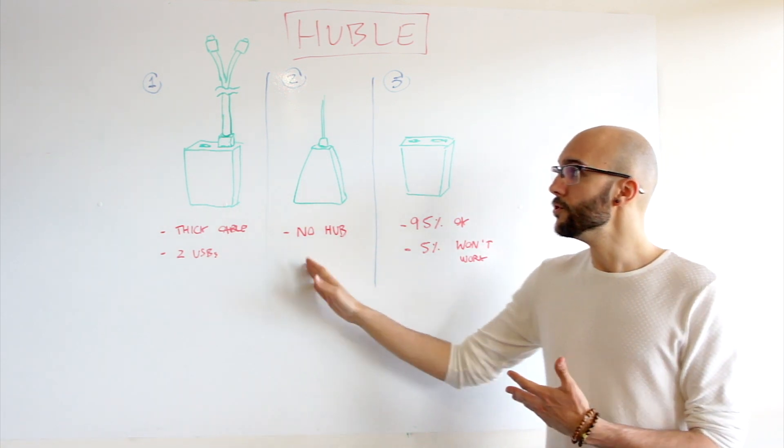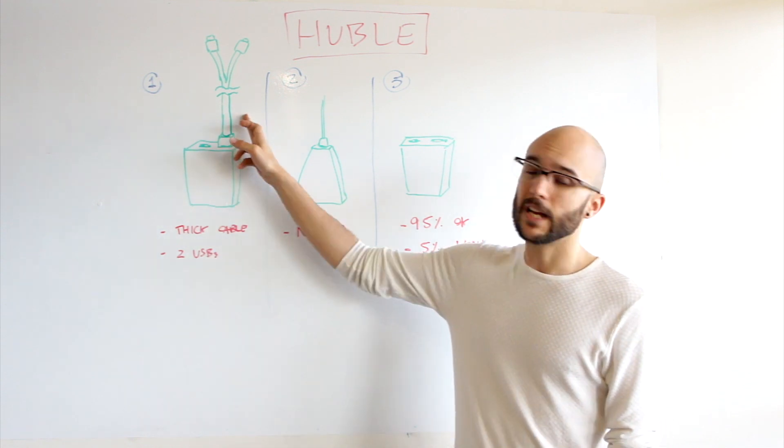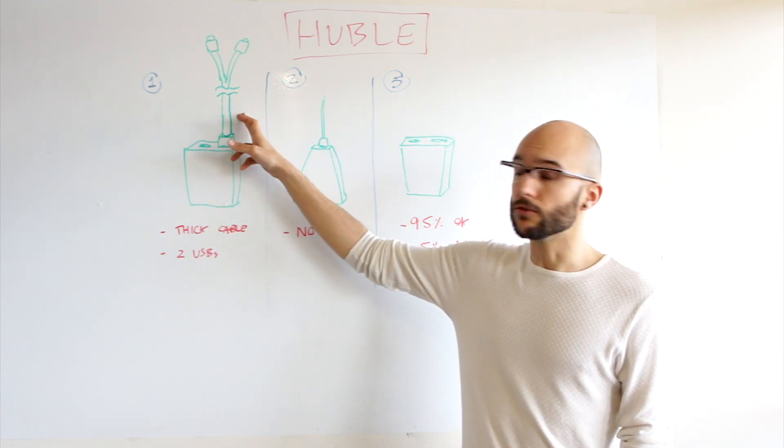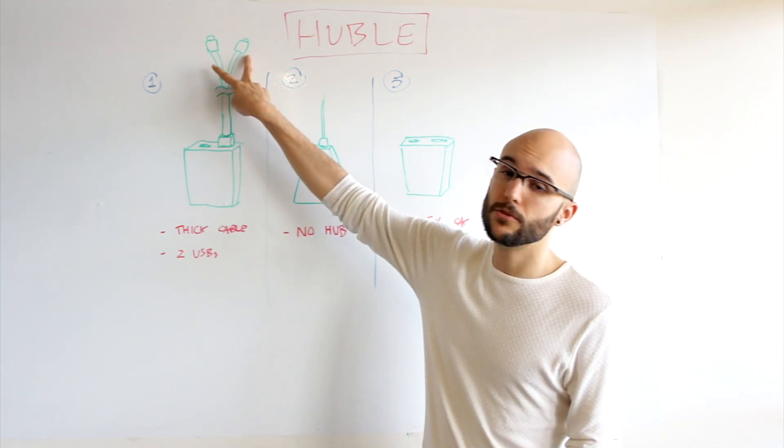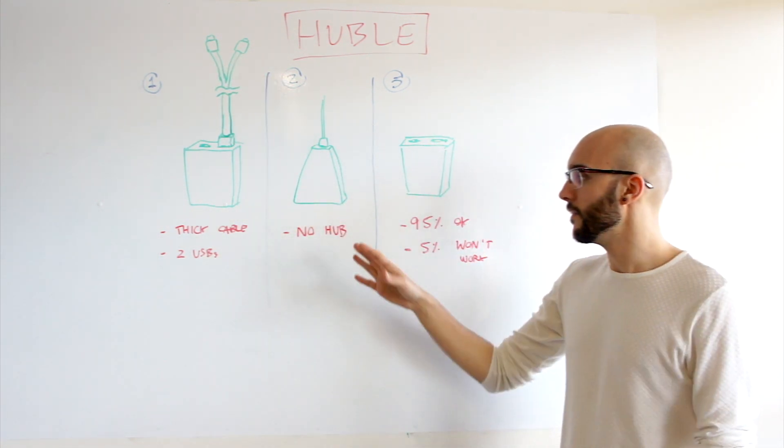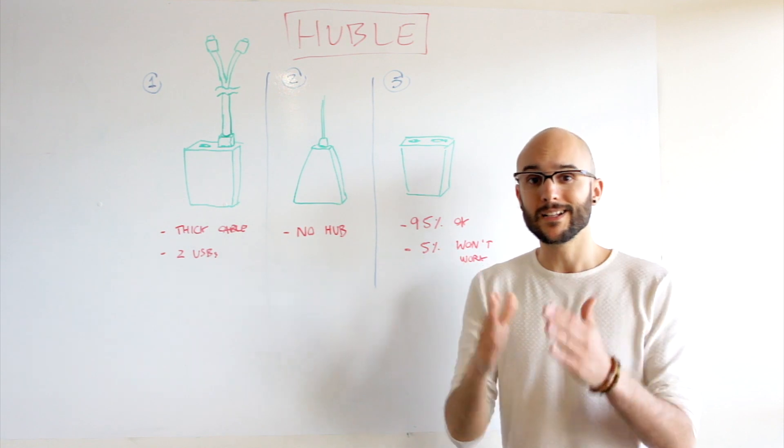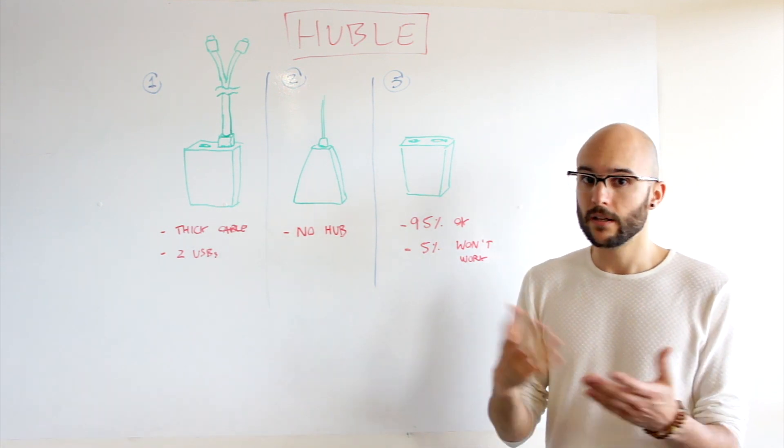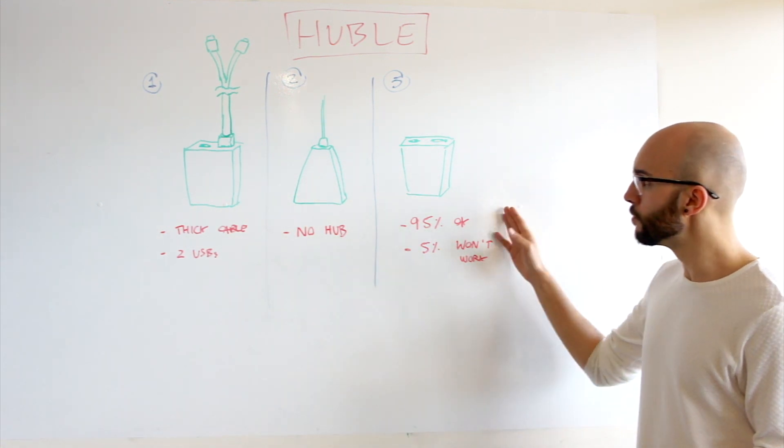The question here is, what would you prefer? Would you prefer to have a thicker cable because you don't really care about having a thicker cable and having two USBs? Or would you prefer, I don't mind that much about the hub, so I prefer to have a cleaner design, less things to plug, simpler.